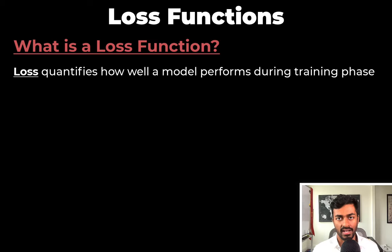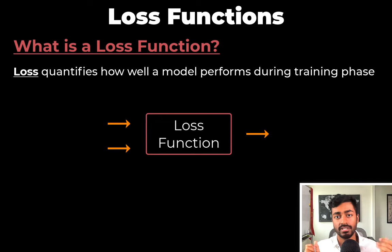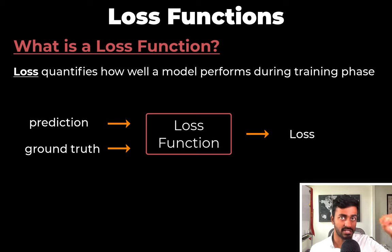A loss function quantifies how well a model performs during the training phase. The loss function is a function and this means that it has some input and an output. The inputs are the prediction from the model as well as the ground truth, and the output is some number known as the loss that quantifies how good or bad the prediction was.